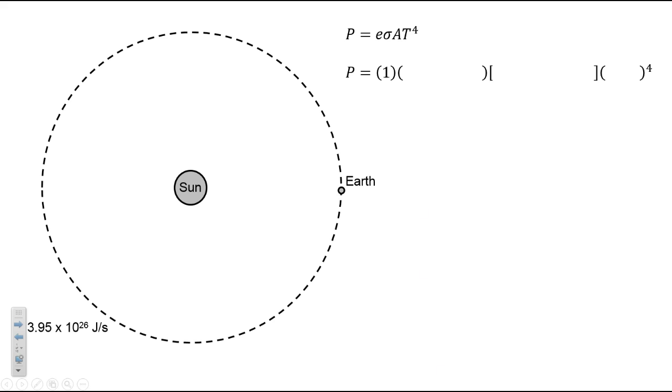So, the emissivity, we'll use 1, because we'll assume it's a black body. We put in the Stefan-Boltzmann constant, and the area of the Sun is just the area of a sphere, 4 pi times the Sun's radius squared. T here is the surface temperature of the Sun. When we calculate, we get a value of exactly what we wrote before.